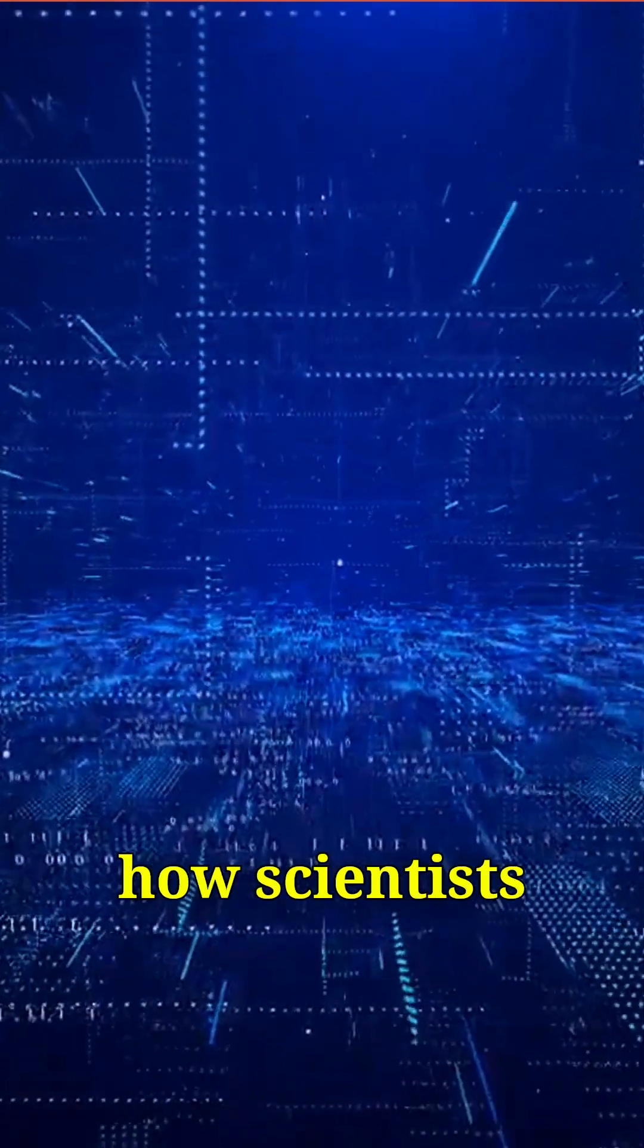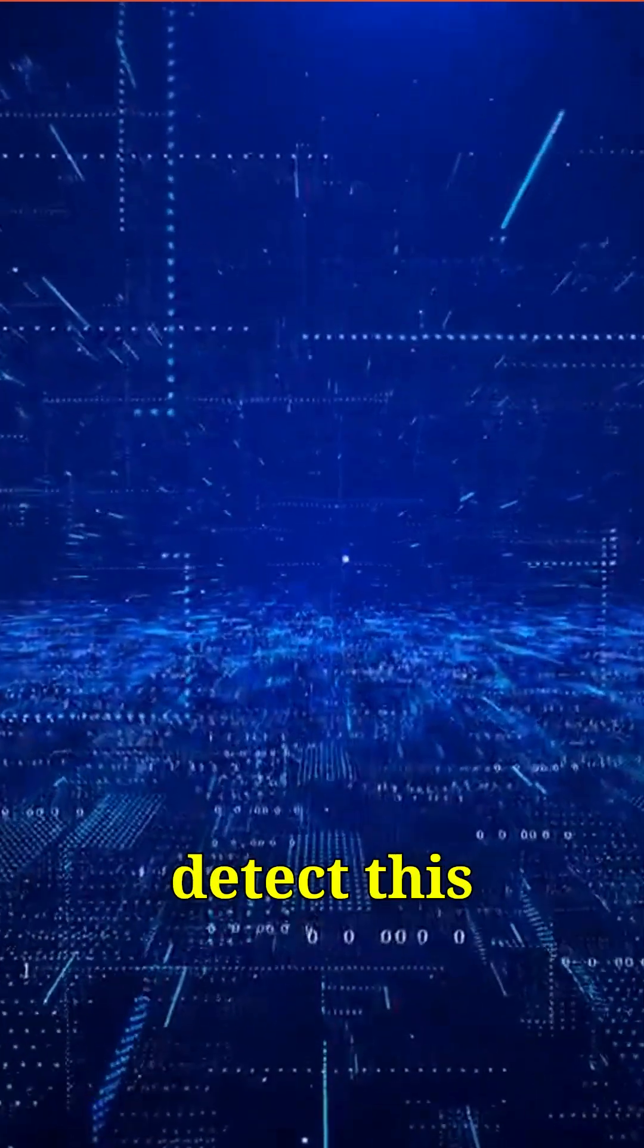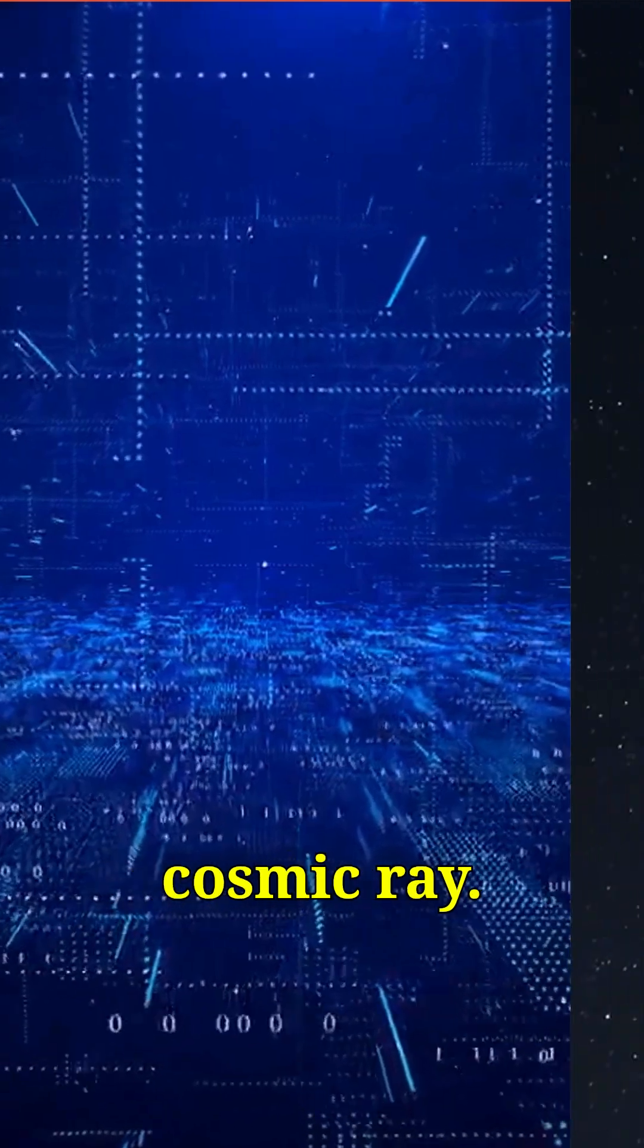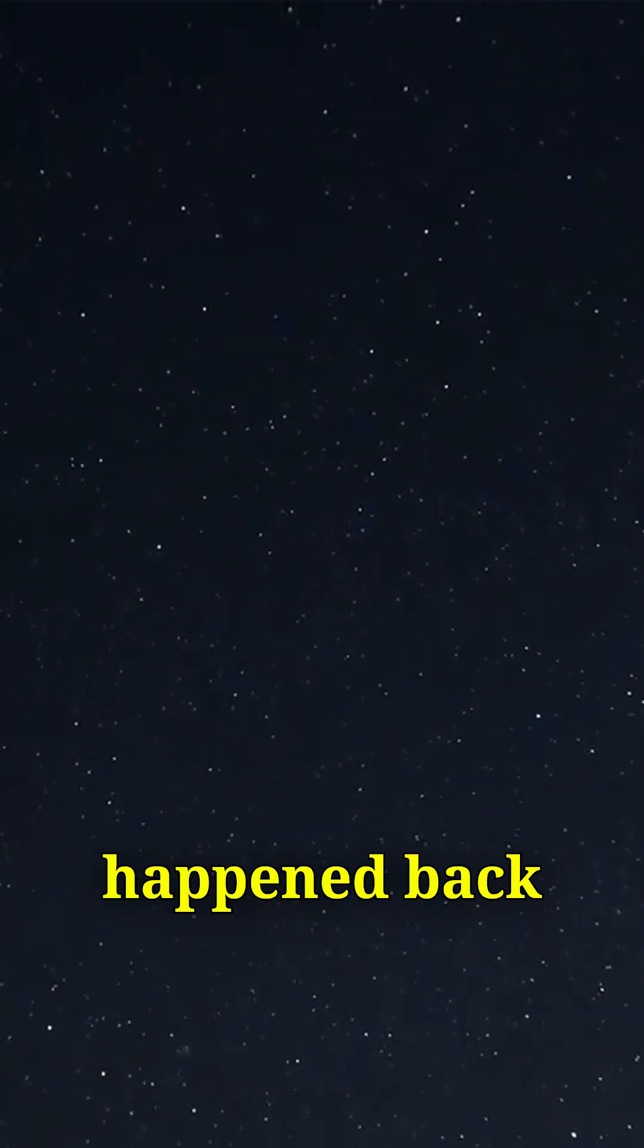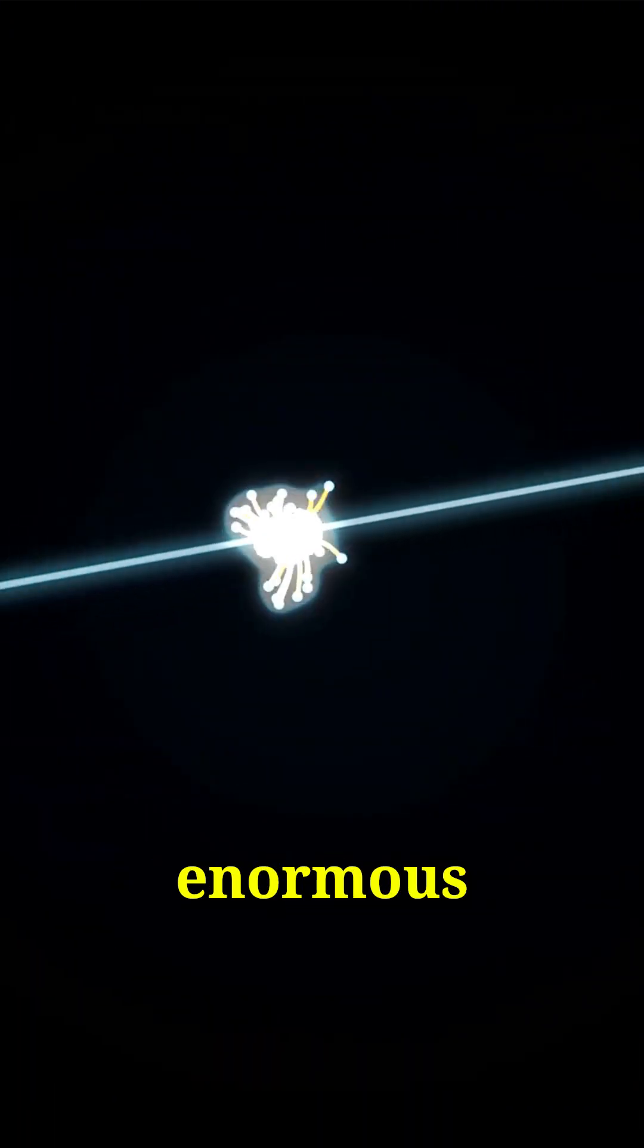Let's explore how scientists managed to detect this single, ultra-high-energy cosmic ray. The detection happened back in 1991 in the desert sky over Utah. When the particle struck Earth's atmosphere, it created an enormous shower of secondary particles, which were then picked up by ground arrays.